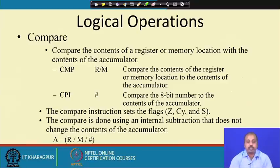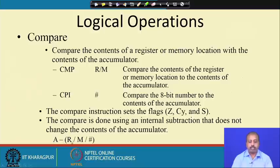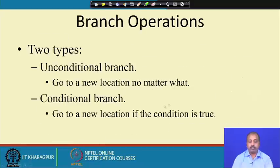The compare instruction sets the Z, carry, and sign flags. If the numbers are the same, the zero flag will be set. The comparison is done using internal subtraction and does not change the content of the accumulator — it performs A minus the second operand (register, memory, or immediate value). If the result is 0, the zero flag is set; if a carry is generated (R/M is larger), the carry flag is set; and the sign flag reflects whether the result is positive or negative.